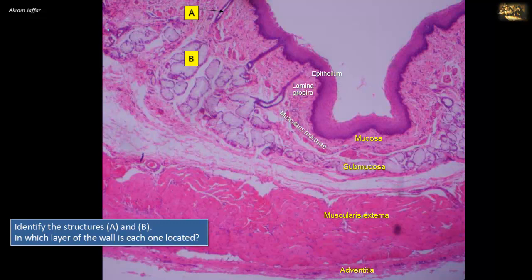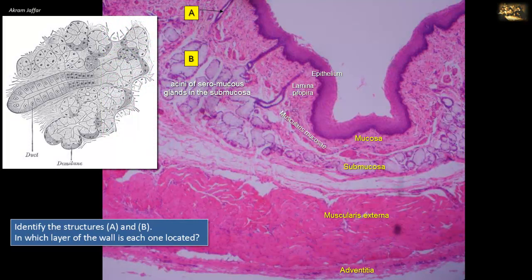The epithelium is stratified squamous, non-keratinizing — this is a section of the esophagus. B is located in the submucosa. Characteristically, the submucosa of the esophagus contains mucous glands, mainly in the upper and lower parts, which aid in lubrication. B marks the acini, which are mostly mucous; however, there are also some serous demilunes, which is why they are called seromucous glands. The secretion is transported through ducts that traverse the mucosa — one can be seen here in A — and open on the mucosal surface.